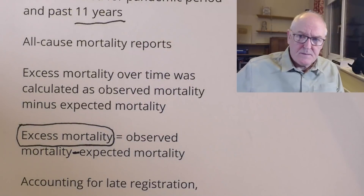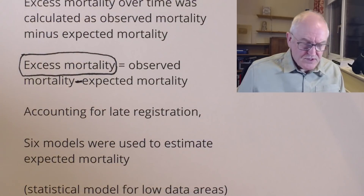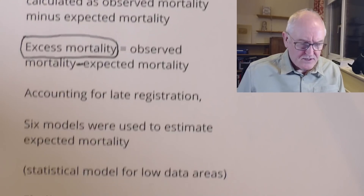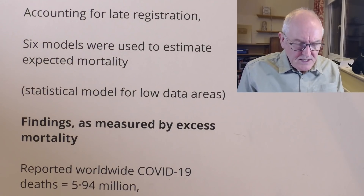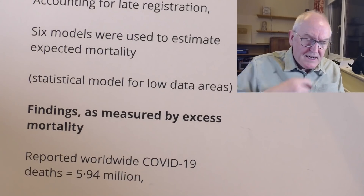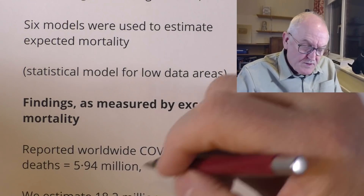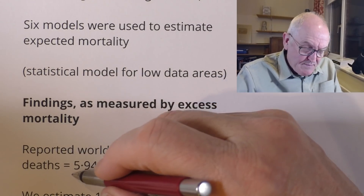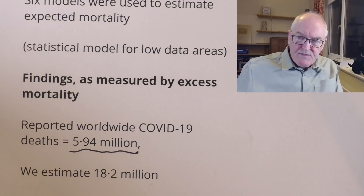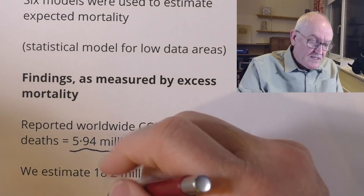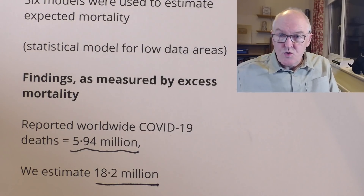It's quite sophisticated the way they collected this for so many areas — a major piece of work. They accounted for late registrations, used different models, and accounted for heat waves and other factors — really quite impressive. As measured by excess mortality, as of the end of 2021 there were basically 6 million people reported to have died of COVID, while their estimates for excess mortality is three times that: 18.2 million.